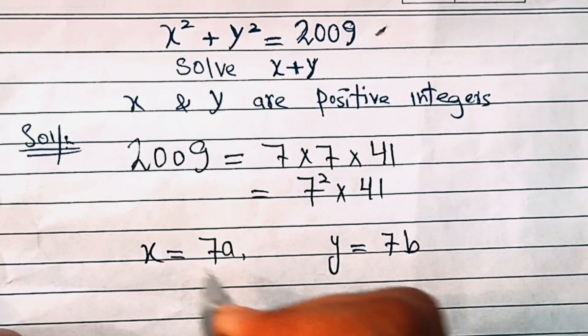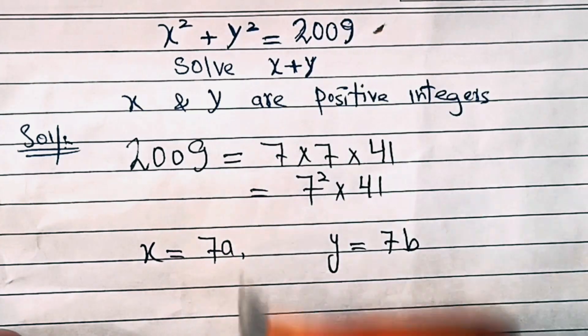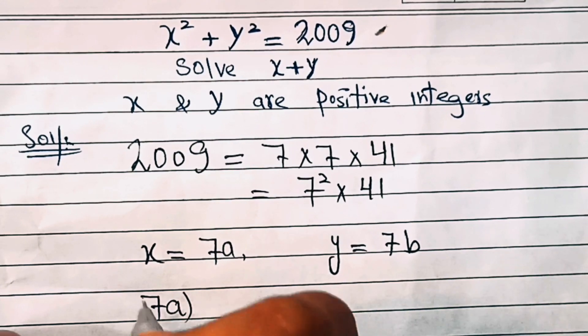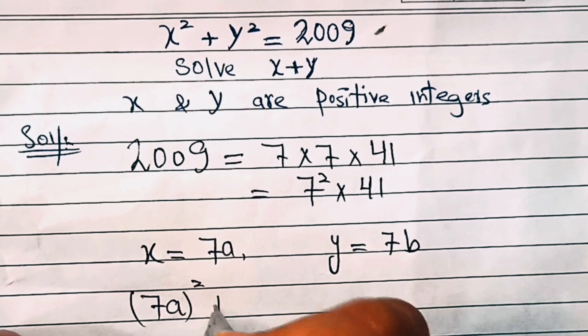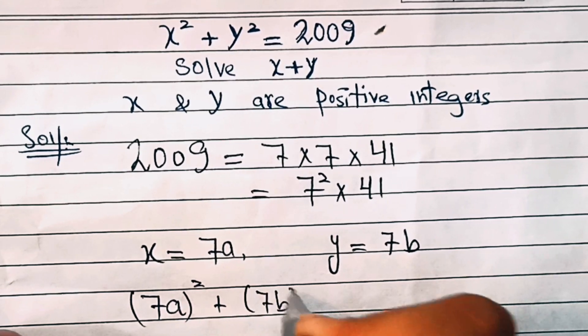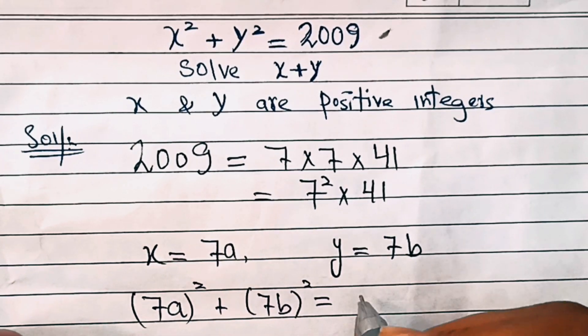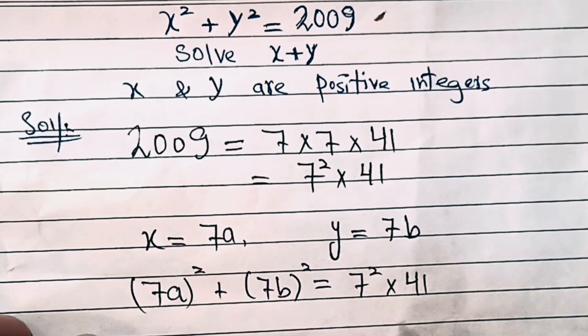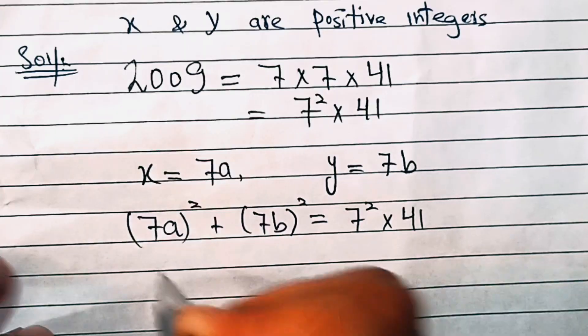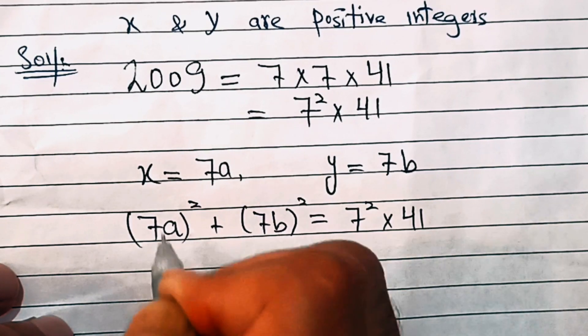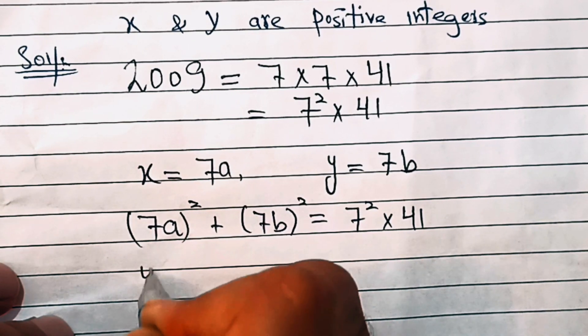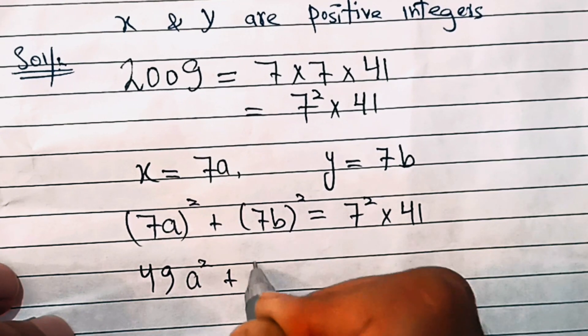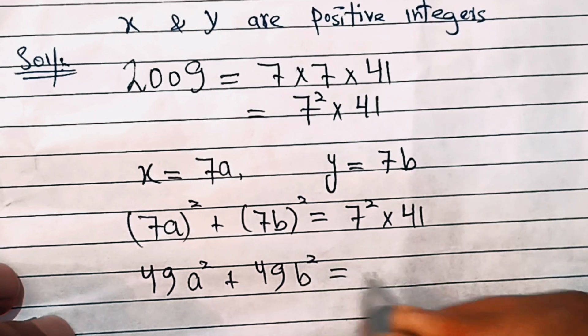Now let's put the value of x and y in this equation. So we have seven a square plus seven b square equal to seven square into 49 times 41.